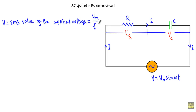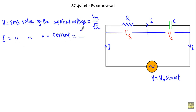We get the RMS value of the applied voltage by dividing the maximum value of the applied voltage by root two. The current I is the RMS value of the alternating current flowing in the circuit, and we get the RMS value of this alternating current by dividing the maximum value of the current by root two. Let's say the voltage across the resistor is VR and the voltage across the capacitor is VC.